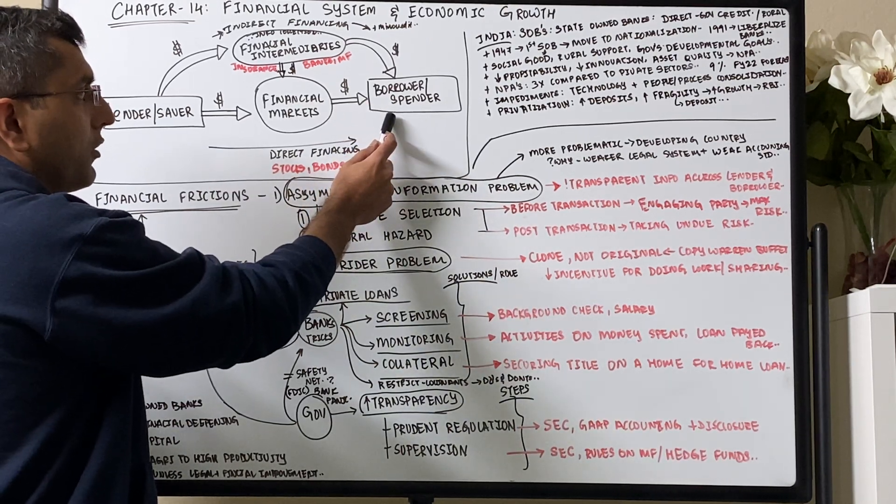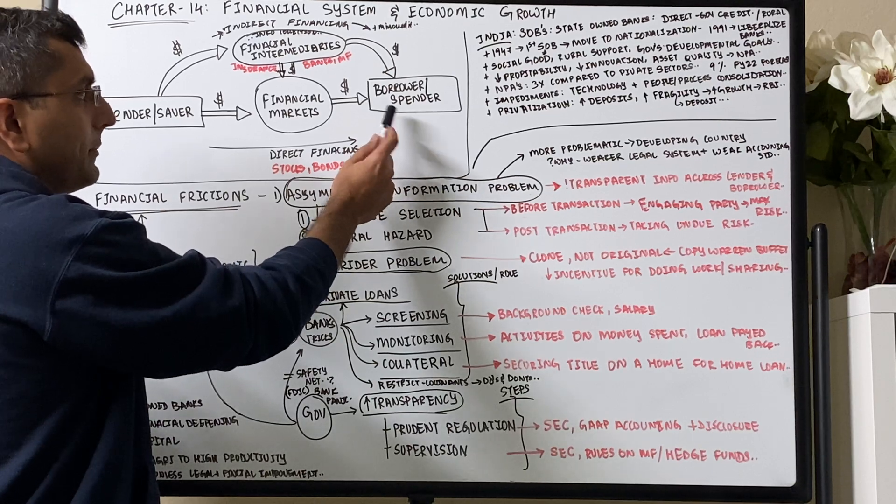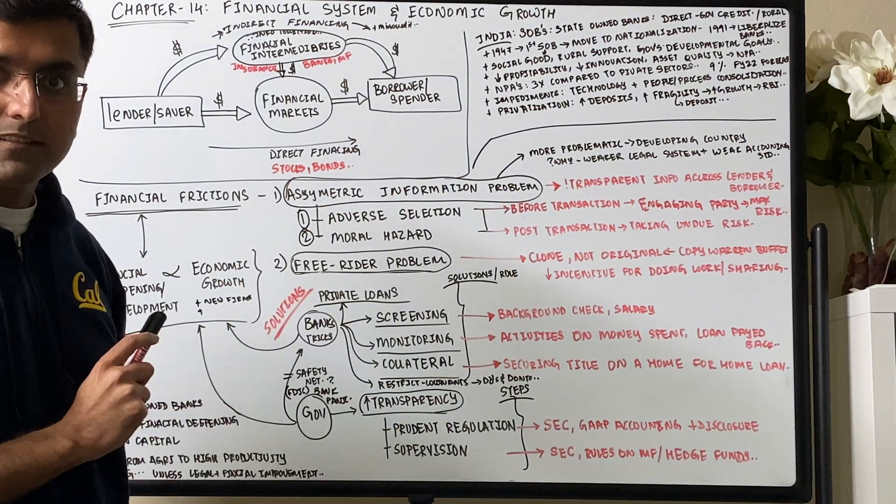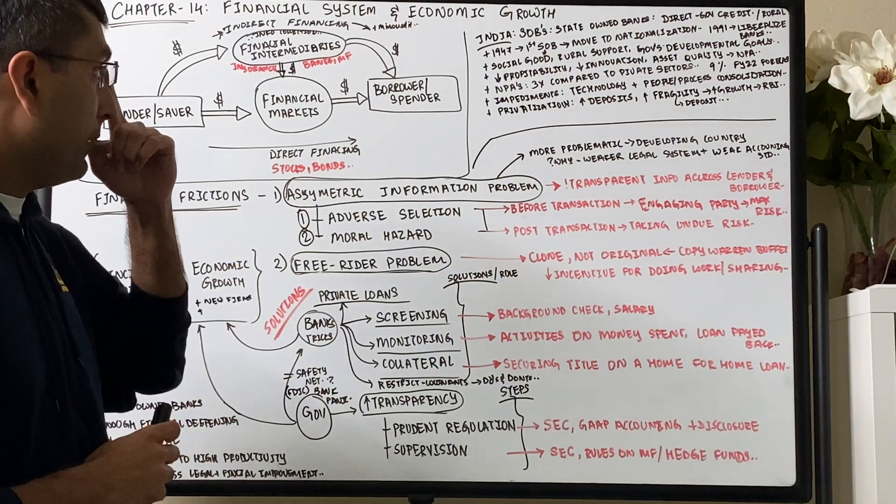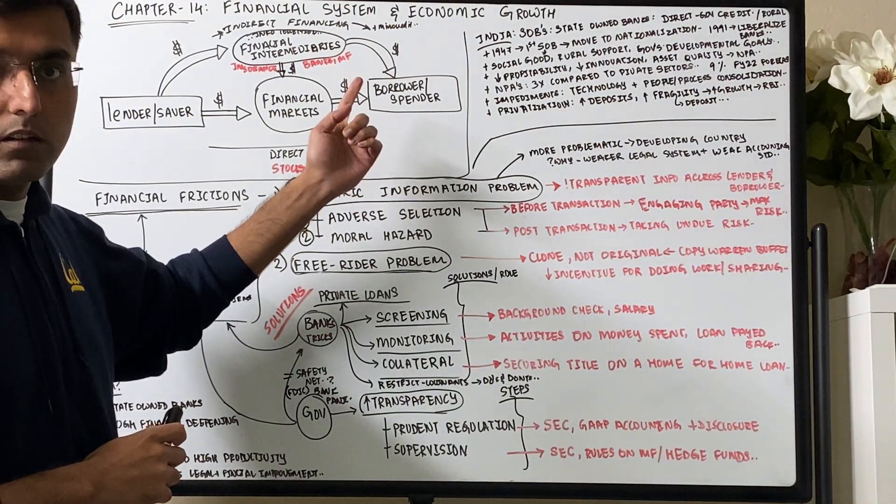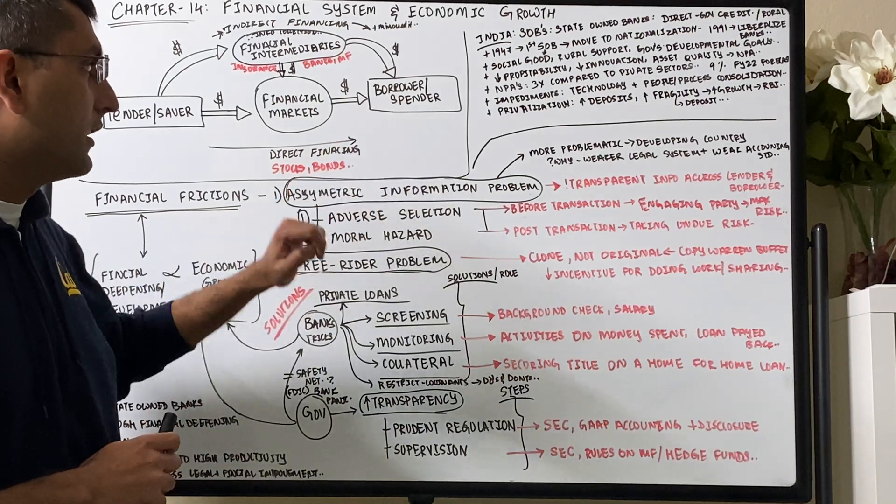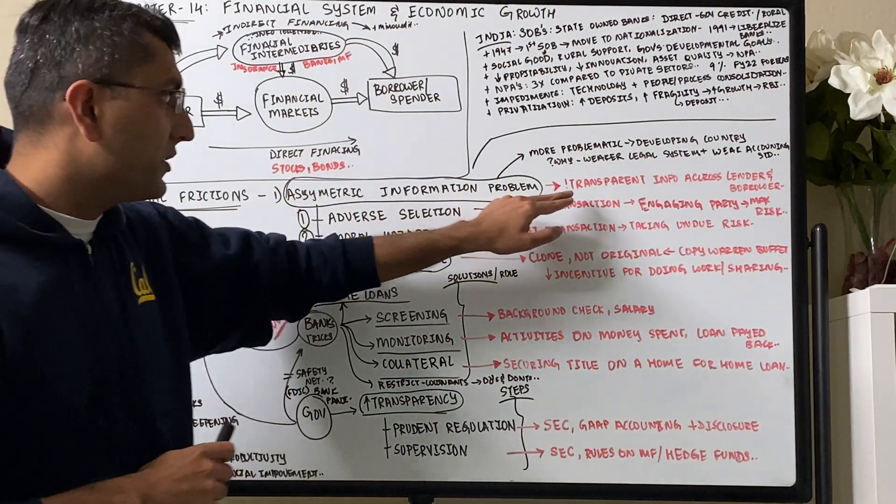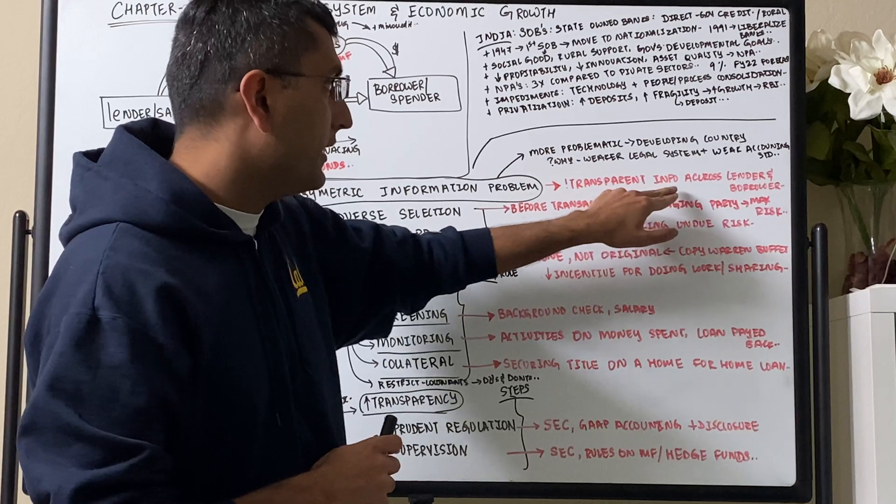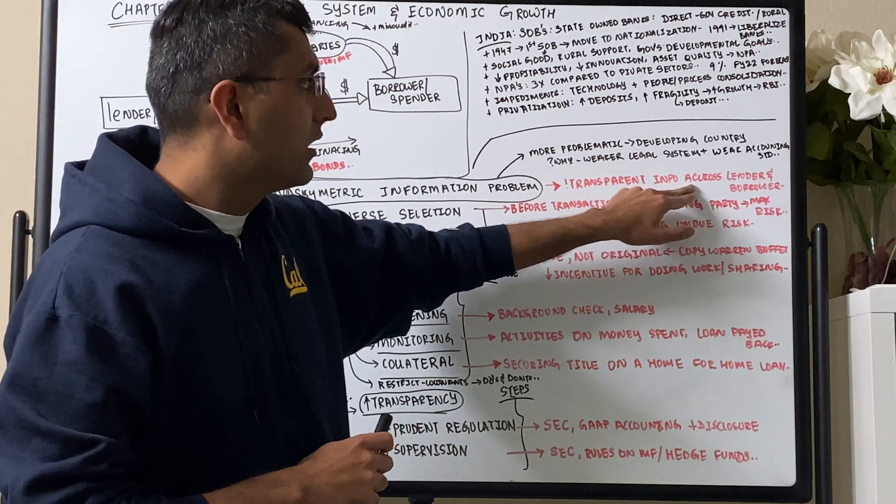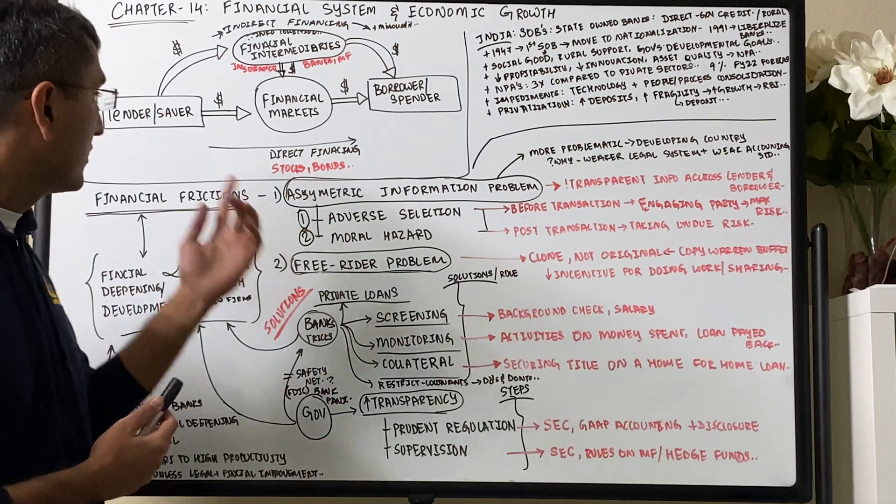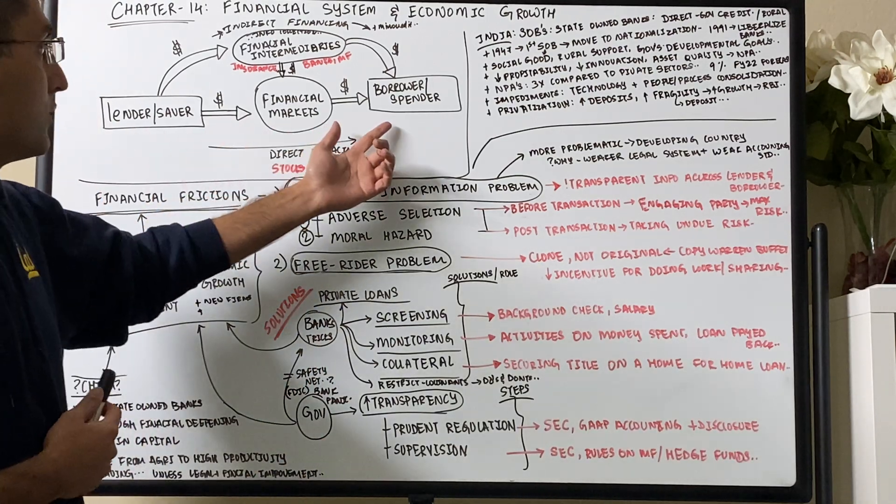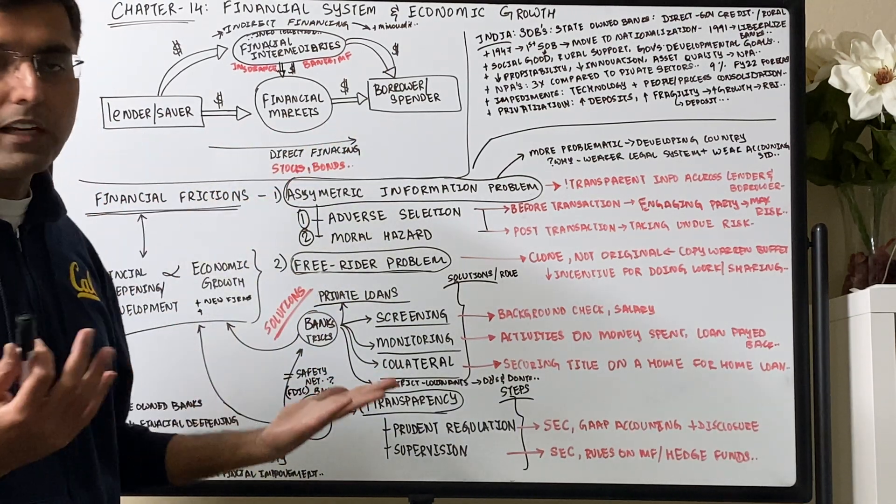The one who is trying to borrow is the one who has maximum risk, most likely, because they want to borrow. But it could also be a good risk to take because their idea might be very solid. So asymmetric information problem is when there is not enough transparent access of information, which can lead to risk aversion. The borrower could be risky, so the lender just assumes I shouldn't be lending.